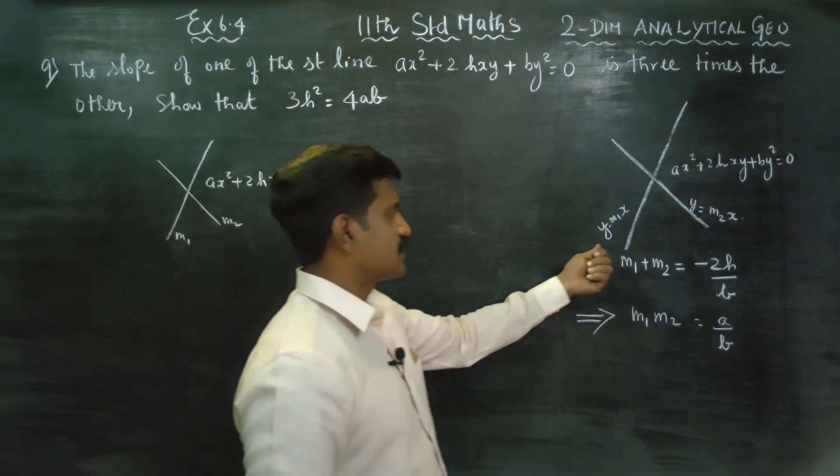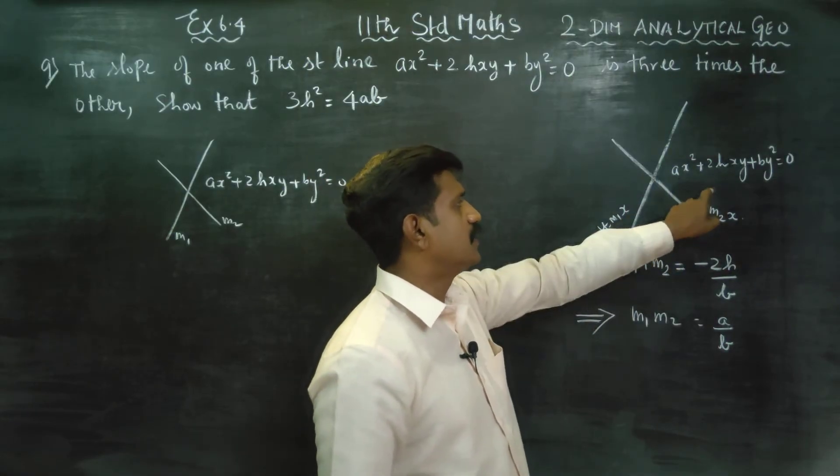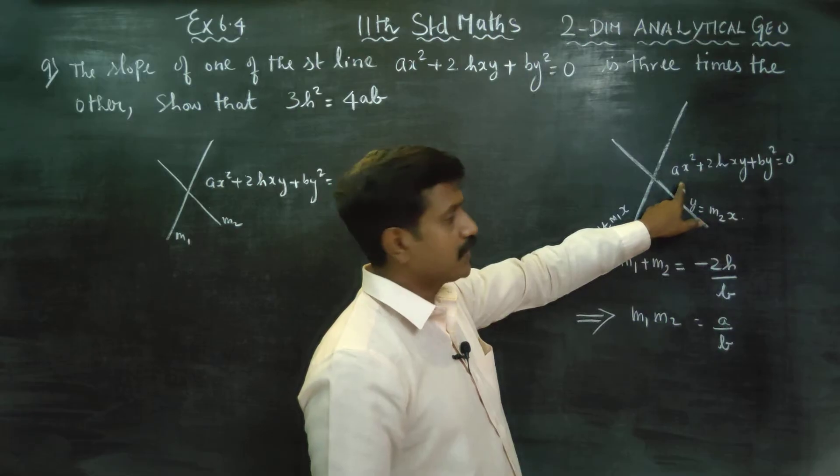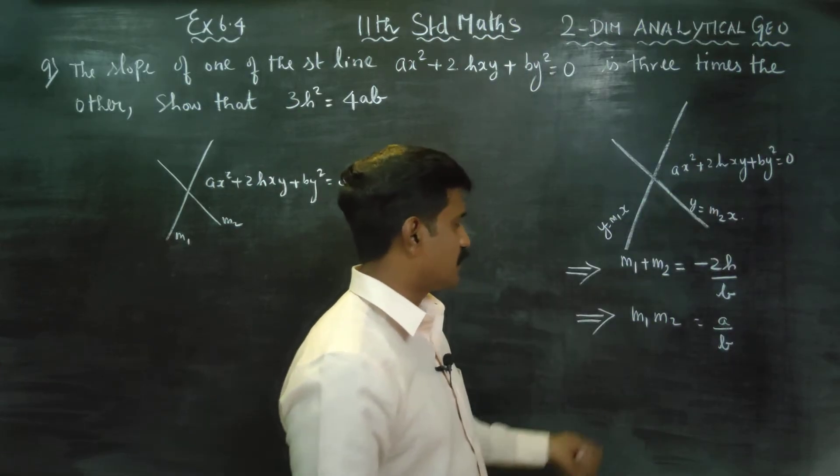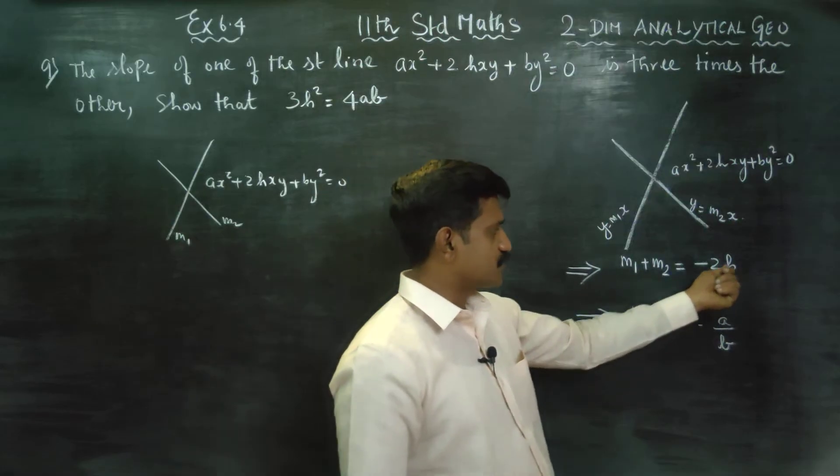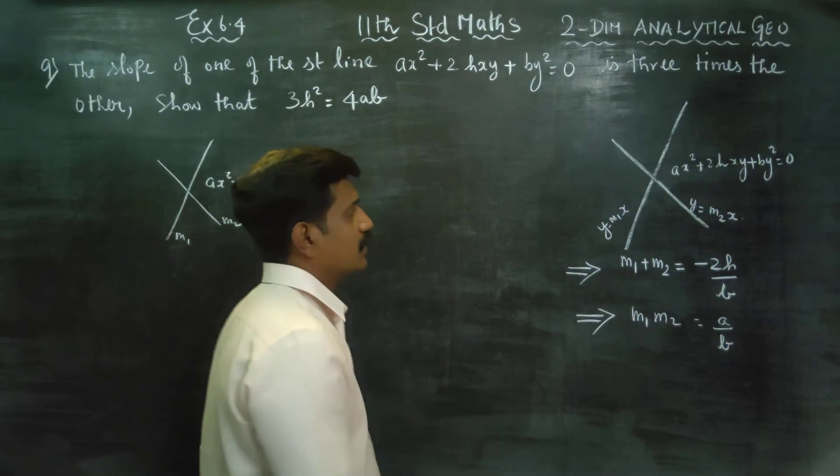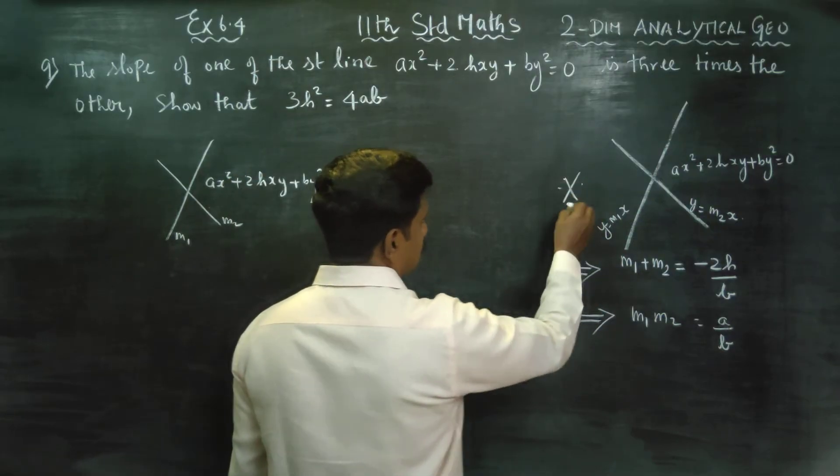If two straight lines y is equal to m1x, y is equal to m2x, two straight lines cut out, this pair of straight lines form. This pair of straight lines form, sum of the slopes m1 plus m2 is equal to minus 2h by b, m1 m2 is equal to a by b, ready-made formulas. We are going to use these formulas here.